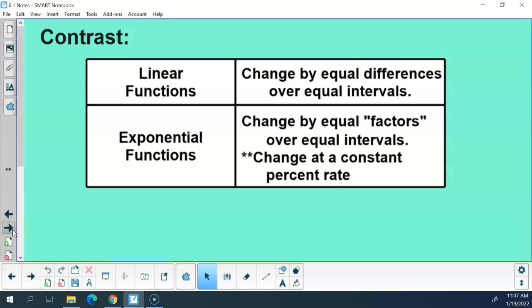Let's contrast and compare linear functions to exponential functions. Now, you don't have to write this slide down or the next slide. A linear function has a rate of change that is constant. Change by equal differences over equal intervals. So if I go one to the right in a linear function, I'm going to go up or down the same every single time I go one to the right. If I go one to the right and I go down three, that one to the right and down three is going to always be the same all the way through my entire function.